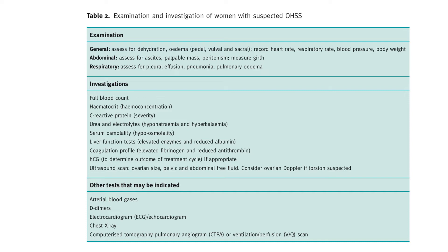Investigations include full blood count, haematocrit, CRP, U&Es, serum osmolality, LFTs, coagulation profile, HCG, and ultrasound scan to look for ovarian size, pelvic and abdominal free fluid — consider ovarian Doppler if torsion is suspected. Other tests based on severity include arterial blood gases, D-dimers, ECG or echo, chest X-ray, and a CTPA or VQ scan if thrombosis is suspected.